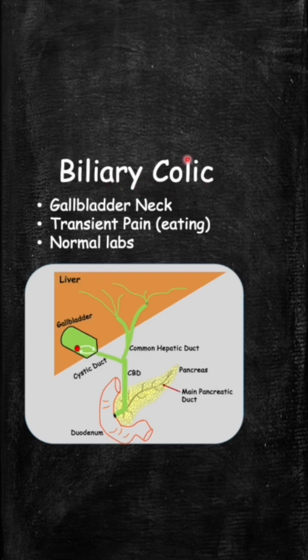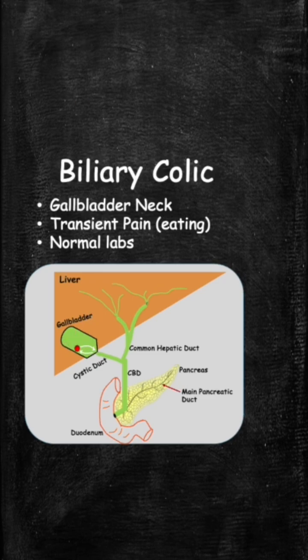The first complication is biliary colic. Colic means pain, so the only issue here is pain. When you eat, especially something fatty, the gallbladder squeezes. If you have a stone in there, it can get lodged in the neck of the gallbladder. Then when the gallbladder relaxes a couple hours later, the stone falls back and everything is okay. This is a transient pain after eating, and labs will be normal because the obstruction goes away when the gallbladder relaxes.